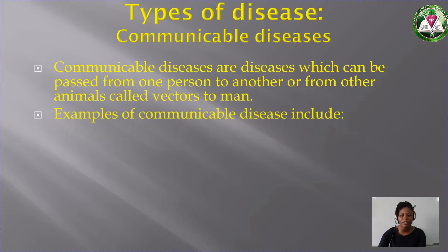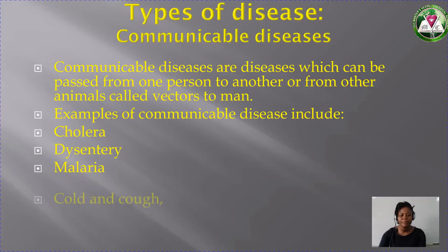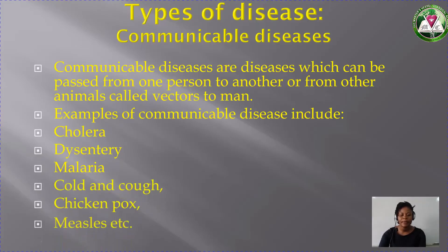Examples of communicable diseases include cholera, dysentery, malaria, cold, chicken pox, and measles. Even coronavirus — you can agree with me that it is a communicable disease. Why? Because when you stay close with someone who has coronavirus, the person can easily transmit it to you.